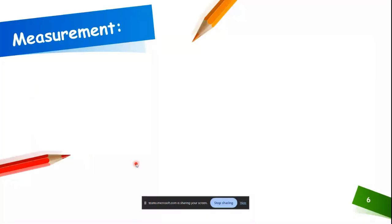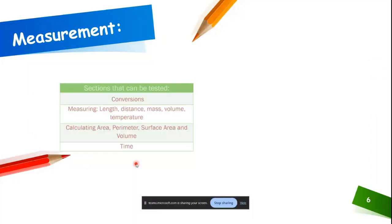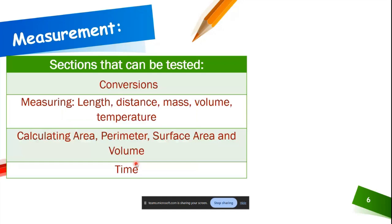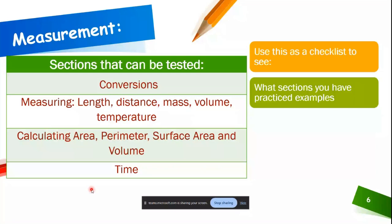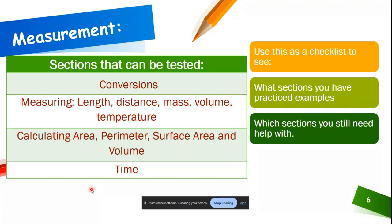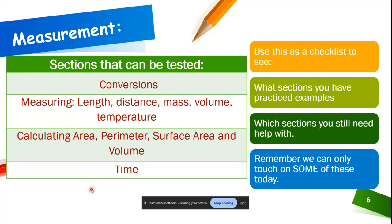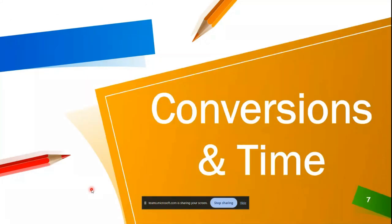The sections that can be tested in measurements are: conversions between units, measuring, calculating area, perimeter, surface area, volume, and time. Use this as a checklist to see which sections you have practised and which you still need help with. We can only touch on some of these today, so let's start with conversions and time.